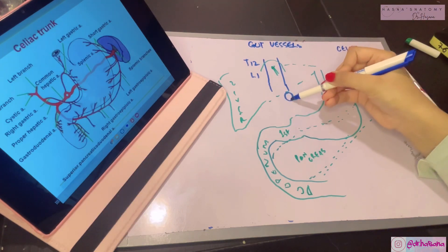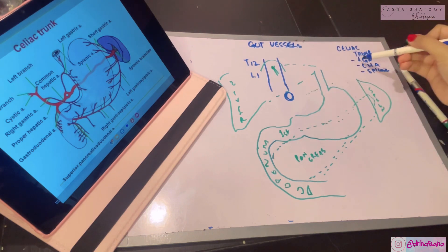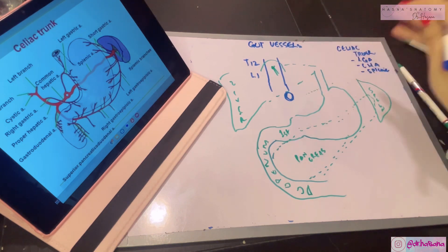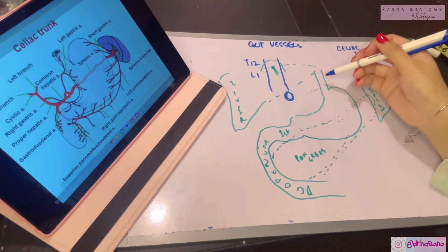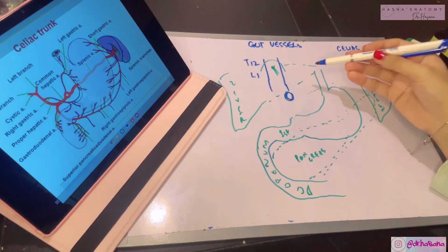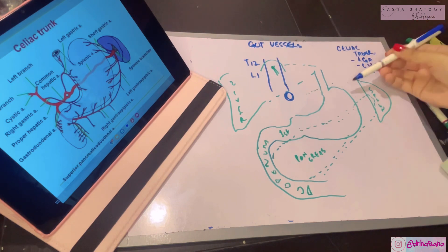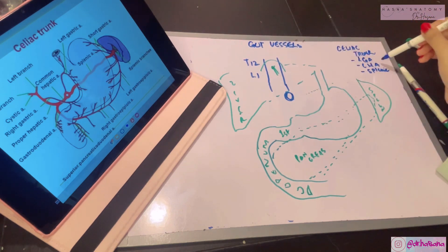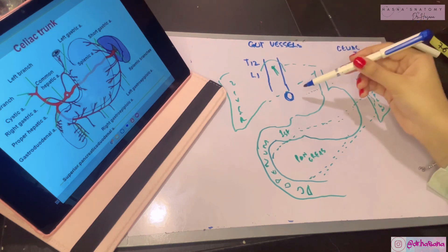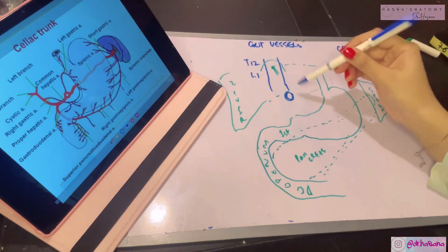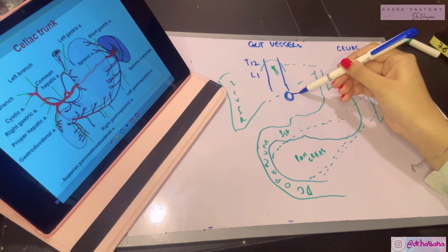The first branch is the left gastric artery. It's quite obvious this artery should go towards the left side toward the gastric area. As a general rule, all these arteries will need a peritoneal fold — a pathway or road to travel in. These peritoneal folds are incorporated into the arteries' courses. Can you identify which peritoneal fold the left gastric artery will travel through?